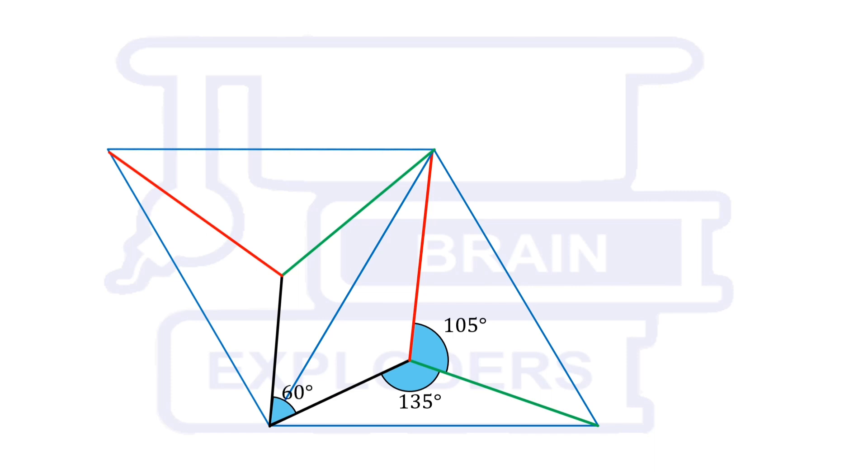From here we can conclude that if we join other ends of black line segments then the triangle formed by these segments is an equilateral triangle. It is because all the interior angles of this triangle come out to be 60 degrees.